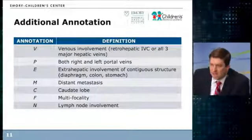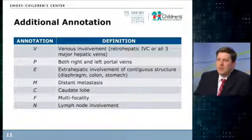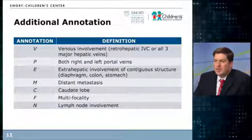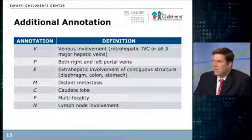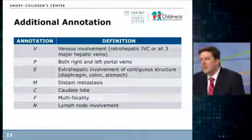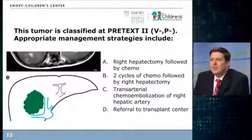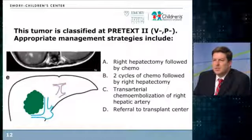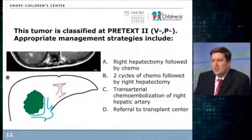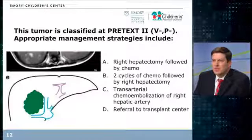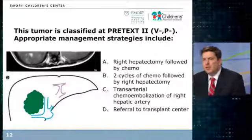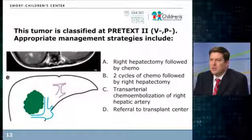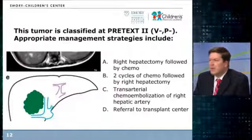Extramedullary hematopoiesis is not involved. There are a number of additional annotations that are made. The two key ones people look at are involvement of the retrohepatic cava or hepatic veins, and then the portal vein bifurcation — whether or not that's involved. If a tumor is classified as PRETEXT II with no involvement of the retrohepatic cava, hepatic veins, or portal vein confluence, appropriate management strategies include the following.